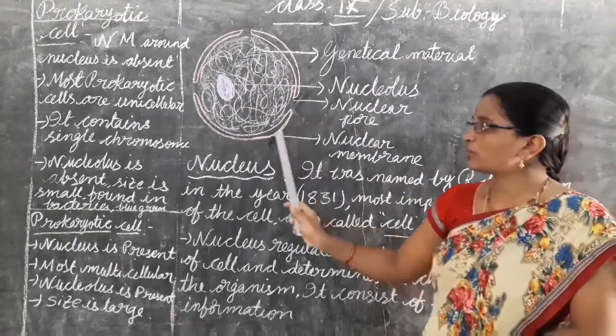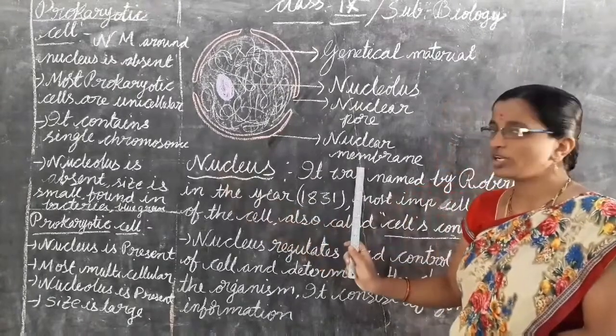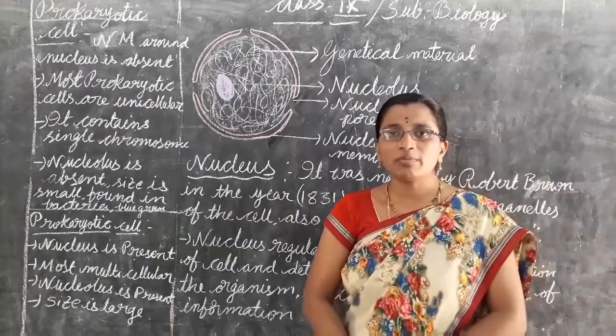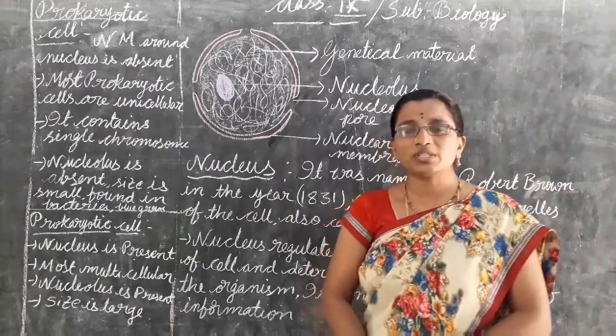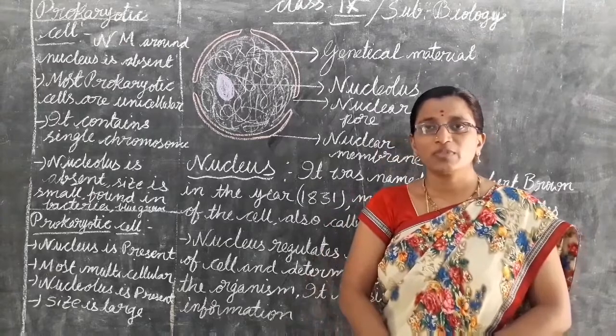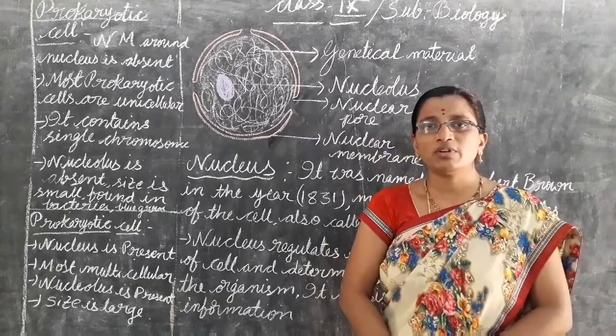The outer membrane of the nucleus is called the nuclear membrane. Cell membrane is present in both plant cells and animal cells. What does cell membrane do?